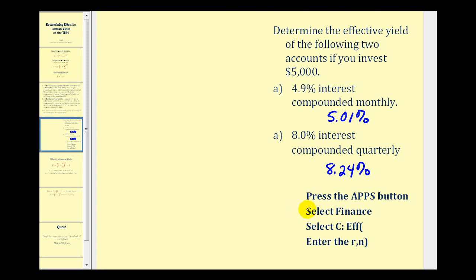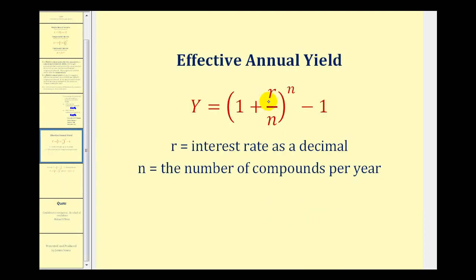So as you can see, it's a pretty straightforward process. But remember, one of the main differences is, in the formula, we express the rate as a decimal, and on the calculator, we enter it in as a percentage. I hope you found this helpful.